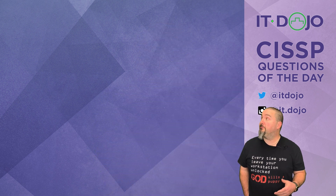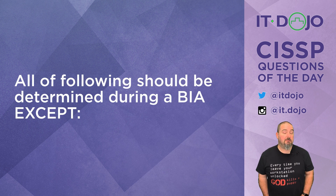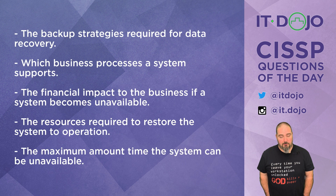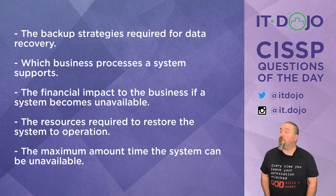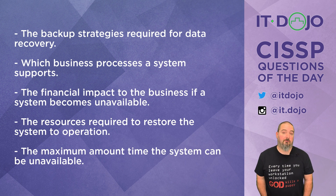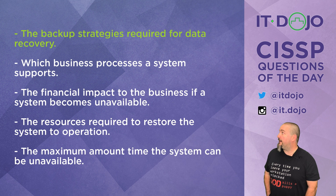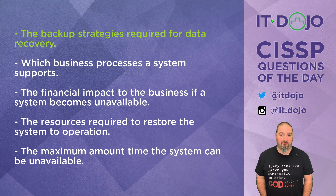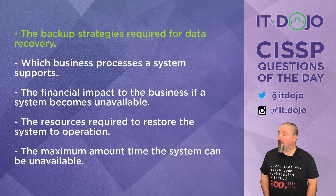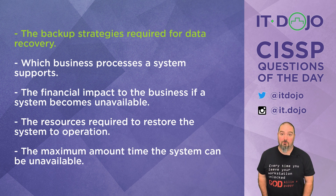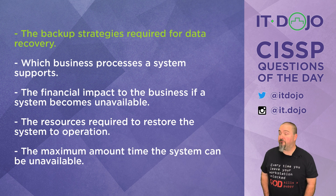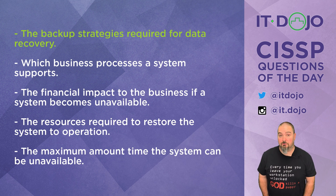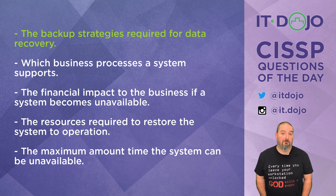Here comes question number one. All of the following should be determined during a business impact assessment except one of these. Which one is it? Click on pause, read through those choices, and when you got it, click play. If you chose the first answer choice, you would have chosen the correct answer. Going in and identifying backup strategies is not part of a business impact assessment. That falls more into the purview of continuity of operations, which comes later. The business impact assessment does not do that. All the other answers are things the BIA should do, but the first one is what it should not do.